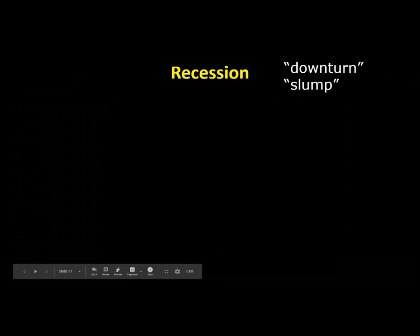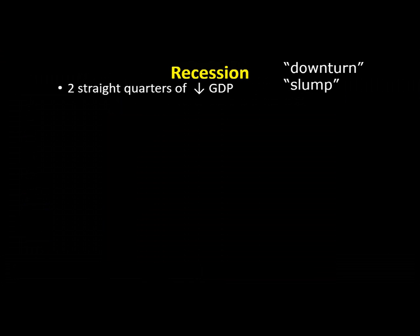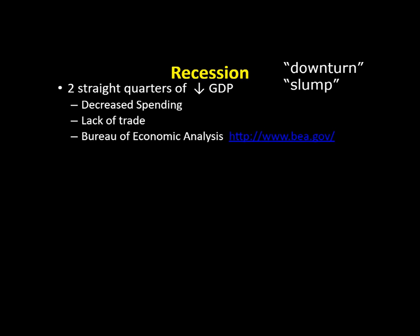This is known as the business cycle. The technical definition of a recession is two straight quarters of negative GDP growth — sometimes called downturns or an economic slump. What causes this? Something that decreases spending, whether it's coronavirus, a stock market crash, a housing crisis, or something else — anything that causes a lack of trade. When countries, firms, and households trade, that causes economic growth, so if something disrupts that, we get a recession. This is all measured by the Bureau of Economic Analysis. You could personally be affected by losing your job due to cyclical unemployment, and you may also see price changes and lower wages.